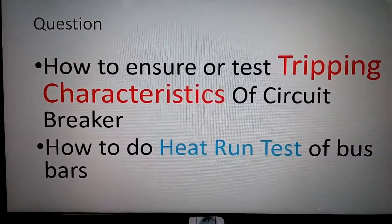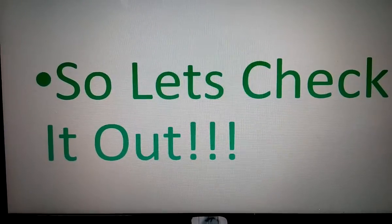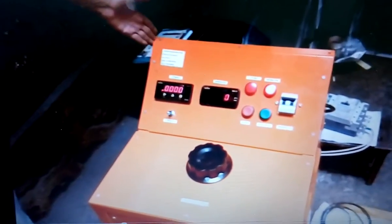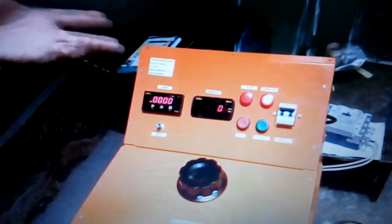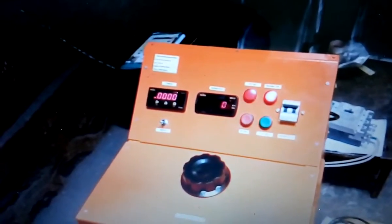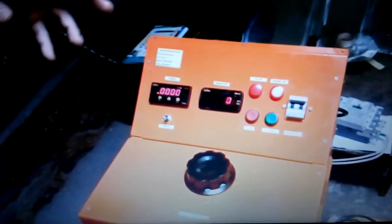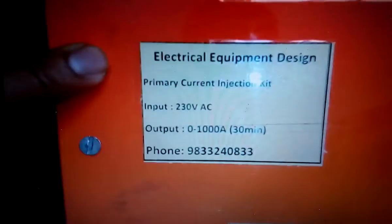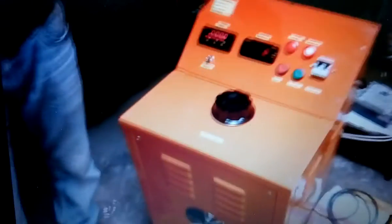So what is the solution for this? Let's check it out. This is primary current injection source. Here you can call this as a current source only, and you can see this is an electrical equipment design machine made for 0 to 1000 ampere current source.